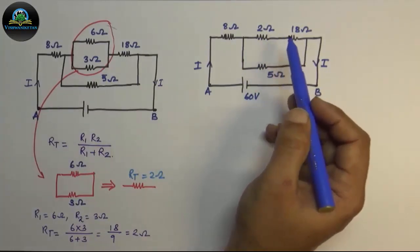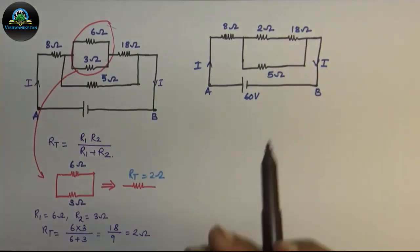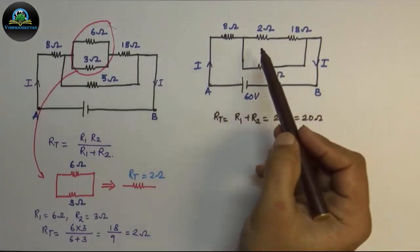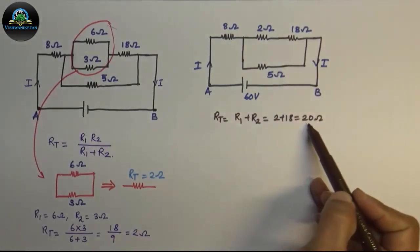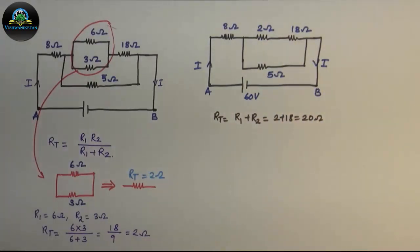So they can be converted into a single resistance. The series combination of 2 ohm and 18 ohm is 20 ohm. Again, the circuit reduces.